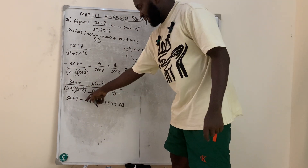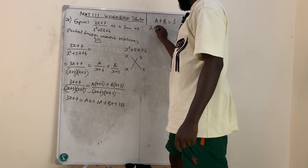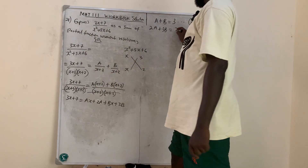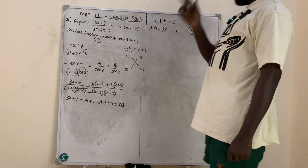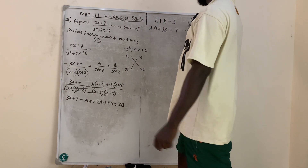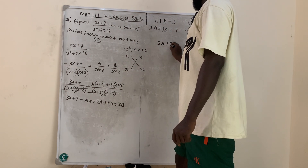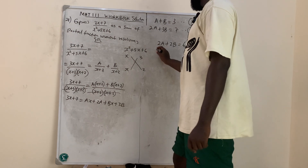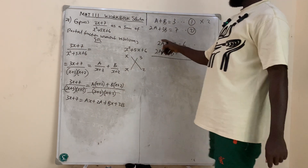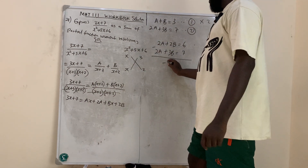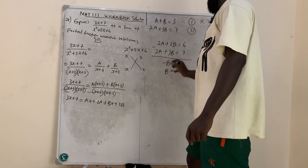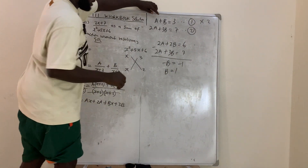Solve equations 1 and 2 simultaneously. Multiply equation 1 by 2: 2A + 2B = 6. Bring down equation 2: 2A + 3B = 7. Subtract: minus B = minus 1, so B = 1. Substitute back: A + 1 = 3, so A = 2.